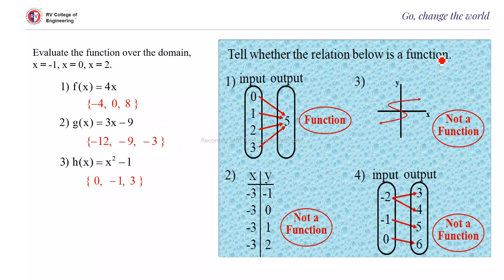Tell whether the relations below are functions or not. Here, 0, 1, 2, 3 are each related to 5 — so it is a function. Whereas here, -3 is related to more than one element, so it is not a function. Next, in the input-output table, -2 is related to multiple elements, so it is not a function. Again, some points have more than one image, so it is not a function.